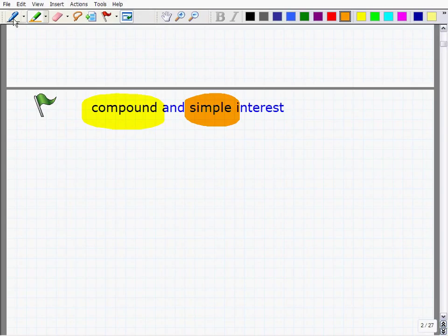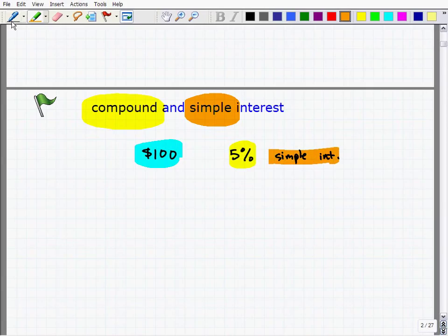Let's take a look at the difference between compound and simple interest. Let's suppose you go to a bank and the first bank says, I'm going to pay you 5% simple interest on your principal. So here you invest $100, that's your principal. The interest rate is 5%, and it's a simple interest rate. So how does this work?